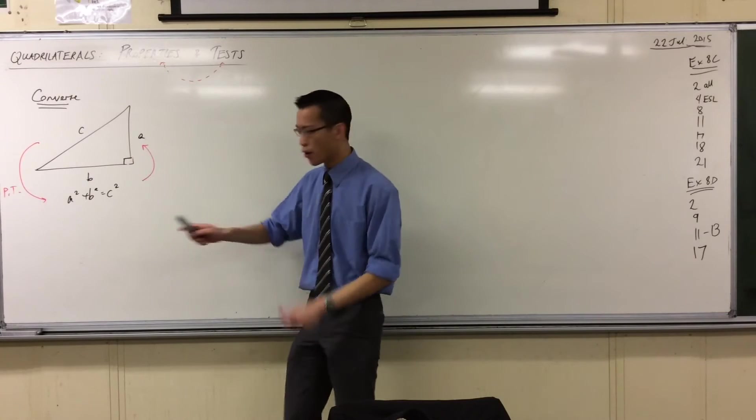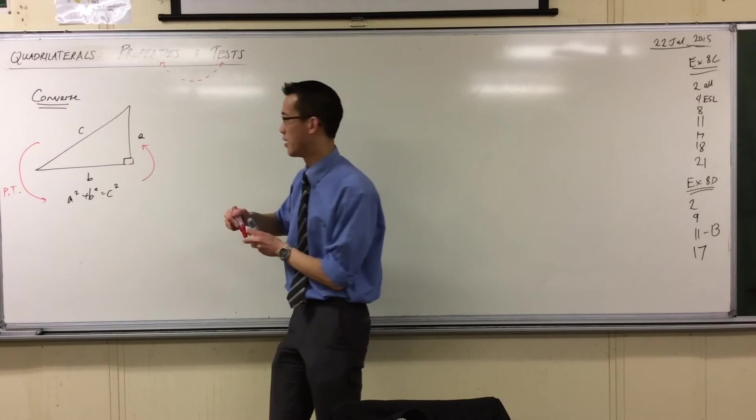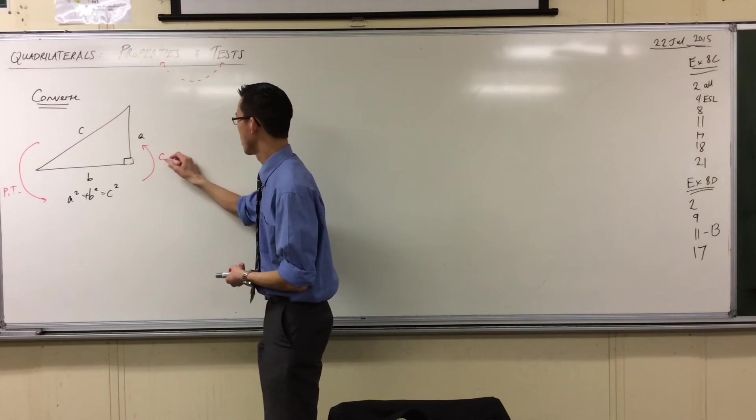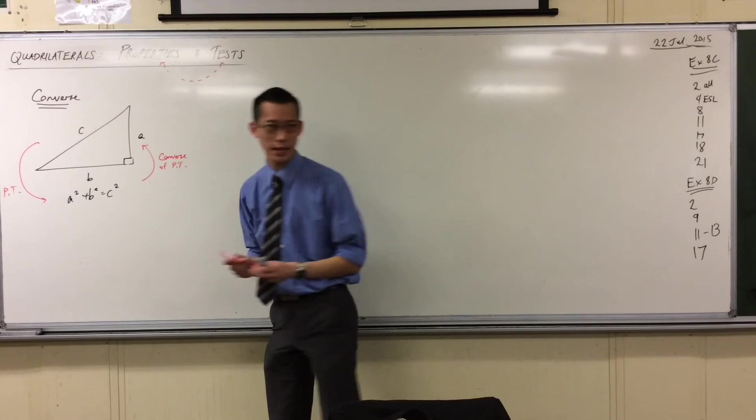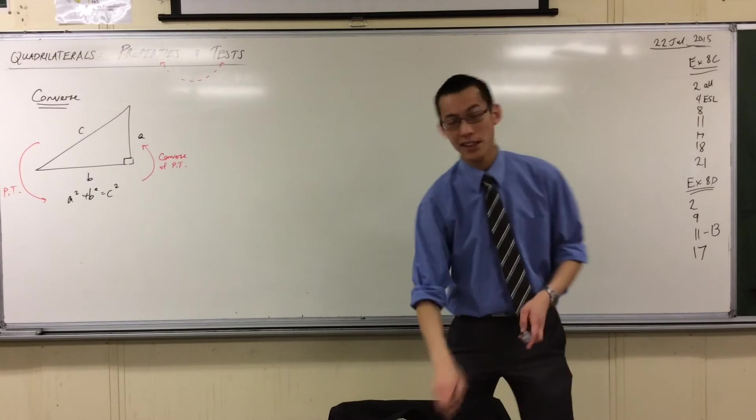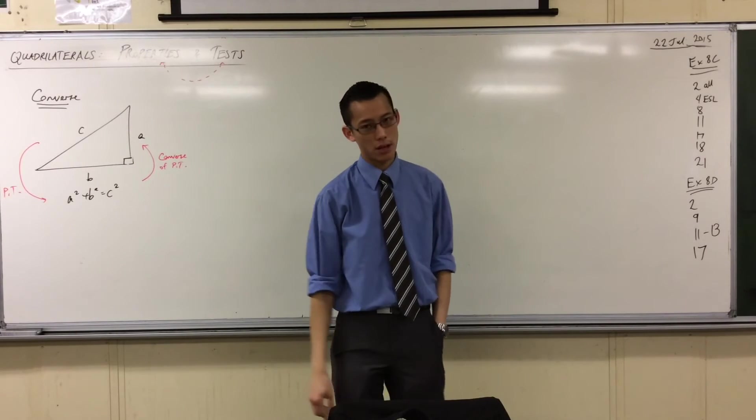So to go from this relationship in sides to a right angle is not Pythagoras' theorem. It's the converse of Pythagoras' theorem. Now, this is exactly the way that properties and tests relate to each other.